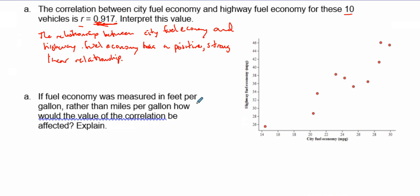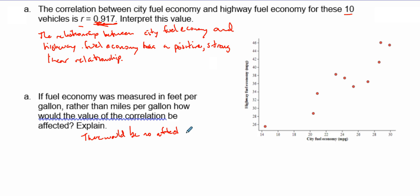Now, if the fuel economy was measured in feet per gallon rather than miles per gallon, how would the correlation value be affected? It wouldn't be affected at all. The r value — this correlation value — does not depend on units. So it's just a correlation between these variables, and there would be no effect to the correlation from changing units.